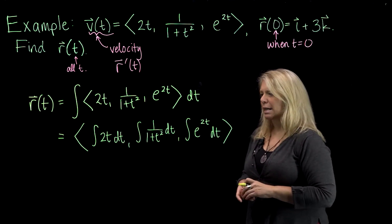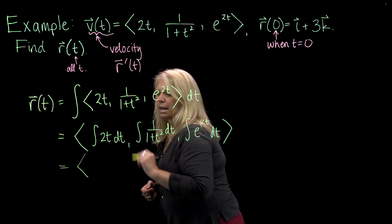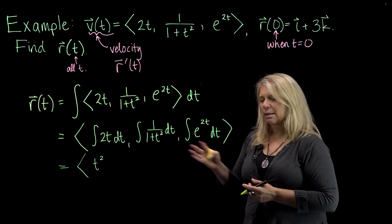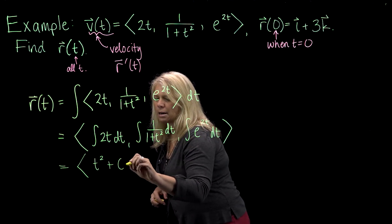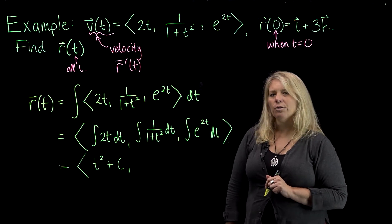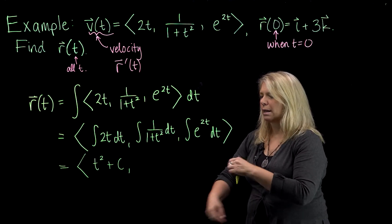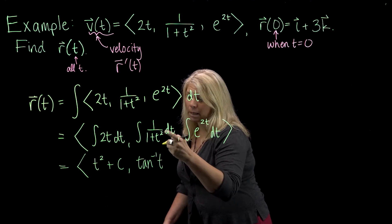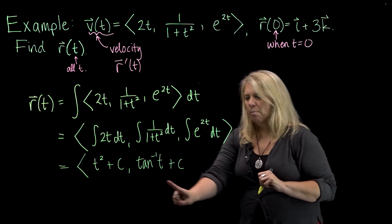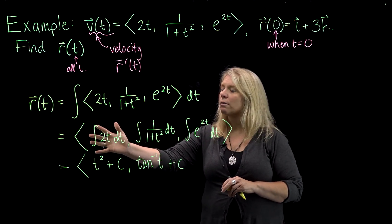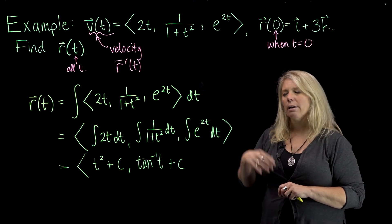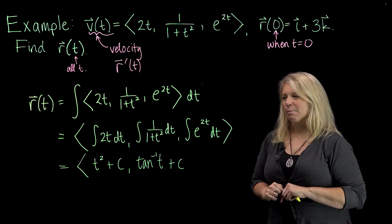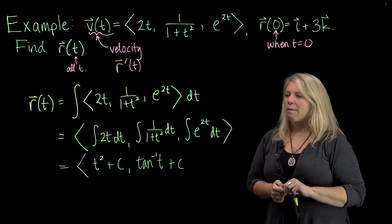These first two antiderivatives are pretty easy. The antiderivative of 2t is t squared plus c. And the antiderivative of 1 over (1 plus t squared) — which you should remember from Calc 1 — is the inverse tangent function, plus c. Here I want to pause: sometimes students just put a big plus c at the end of the problem, and that's worked fine up till this point.